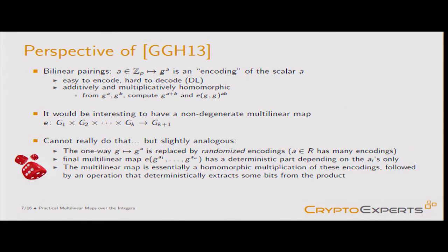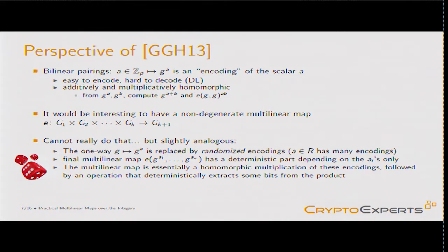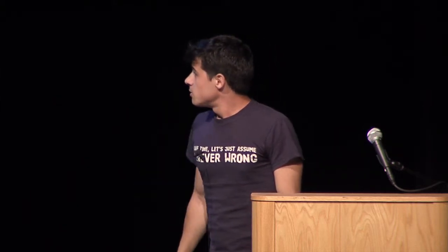What they can do is: we no longer have this deterministic encoding — it's randomized. So an element of the ring has many different encodings. But when you evaluate the pairing, which is multiplication, at the end you have a deterministic part in the final result, and you can extract information that depends only on the underlying scalars and not on the randomness in the encodings.